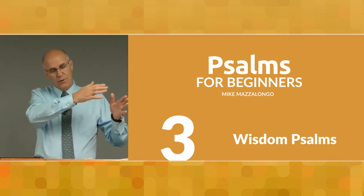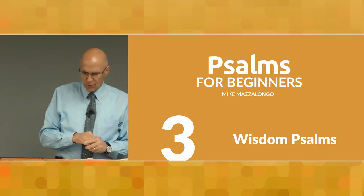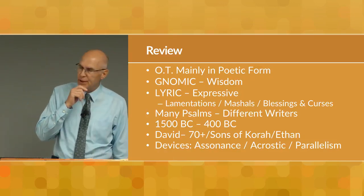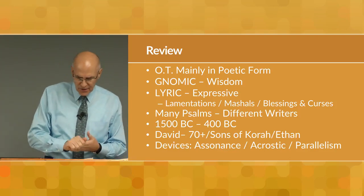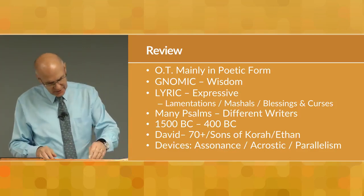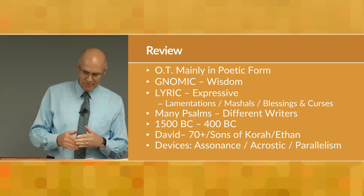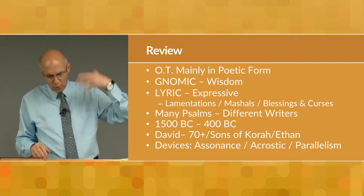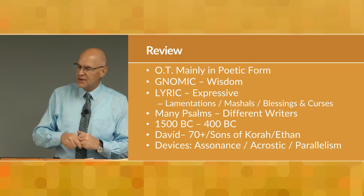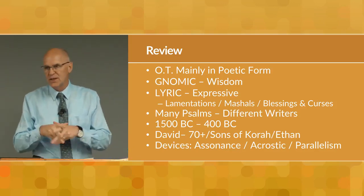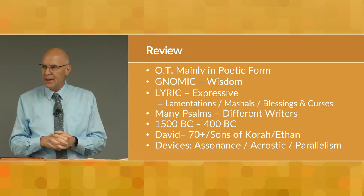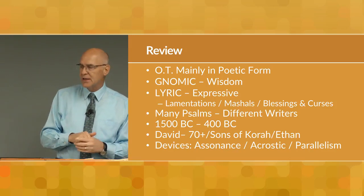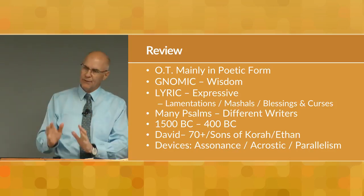I told you there were different categories of psalms. We're going to start with wisdom psalms, but before we do, as we do each week, a little bit of review. We've studied that the Old Testament, true to the form of writing of the times, was written in mostly poetic form. Most of this poetry was divided into two main categories: nomic poetry or wisdom poetry, and lyric poetry, which is expressive and includes a variety of styles.